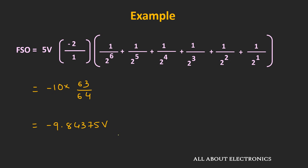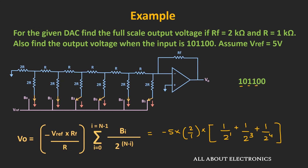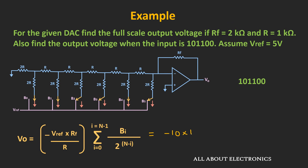So minus 9.84375V is the full-scale output voltage. Now let's find the output corresponding to the given code. Only 3 bits are 1: B5, B3, and B2. The output voltage Vout equals minus 5 × (2/1) × (1/2^1 + 1/2^3 + 1/2^4), which simplifies to minus 10 × (11/16), equal to minus 6.875V. In this way, given a binary code, we can find the output voltage for this DAC.